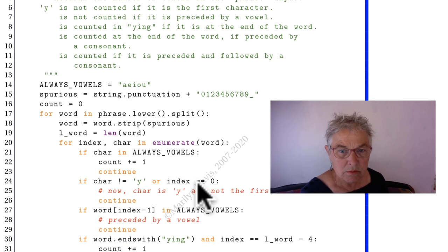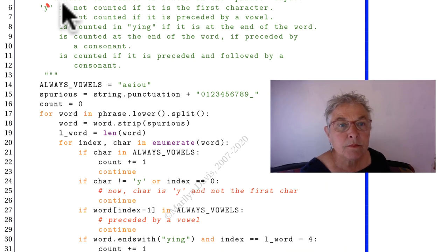If the one that's not in always vowels that we got to here is not y, or the index is zero, it's y at the beginning. That's this. It's not counted. So then we just go on and we do not count it.